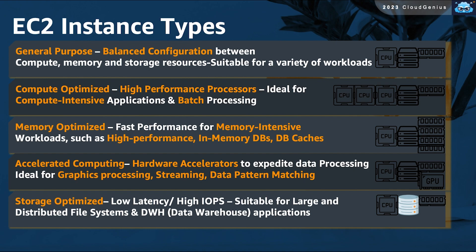Any EC2 instance has a set of hardware specifications associated with it, such as the number of virtual CPUs, gigabytes of RAM, and terabytes of storage. The first family is known as the general purpose type. You choose this type when there are no special requirements about the instance hardware specifications, as it offers a balanced hardware configuration, making it suitable for many general-purpose workloads.